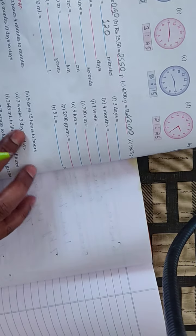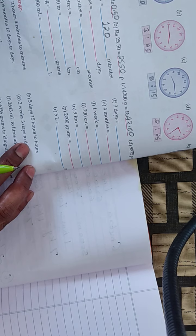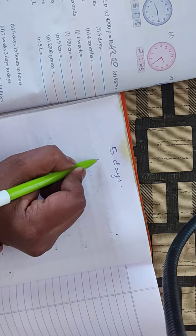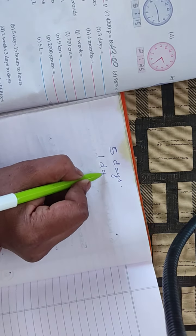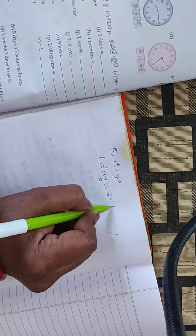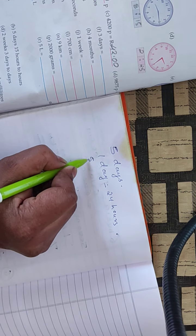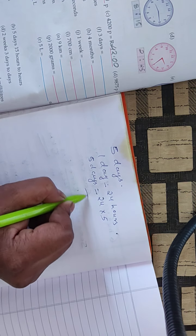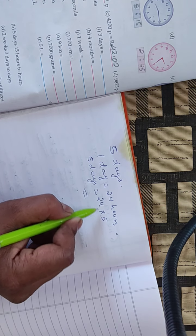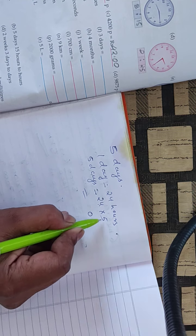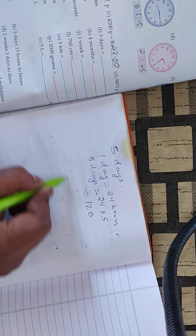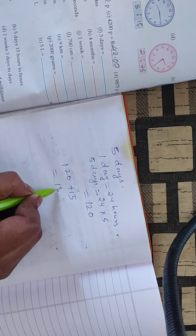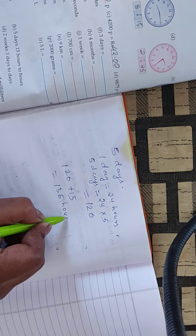Now next is 5 days 15 hours. 1 day equals 24 hours. So 5 days equals 24 into 5: 5 fours are 20, carry 2; 5 twos are 10, plus 2 is 12, giving 120. Now 120 plus 15 equals 135 hours.